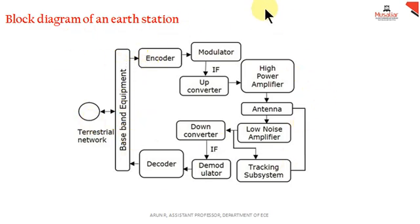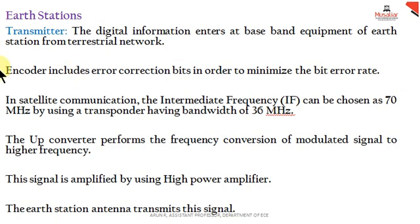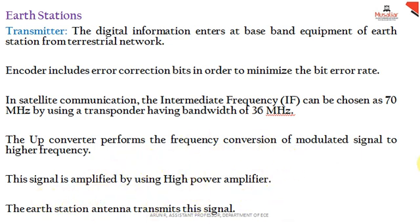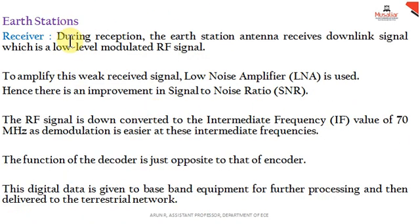The digital information enters at the baseband equipment from the terrestrial network. The encoder includes error correction bits in order to minimize the bit error rate. The upconverter performs frequency conversion to a higher frequency, and this gets amplified through a high power amplifier before being transmitted through the antenna. In the receiver, opposite to the transmitter section, the RF signal is converted to IF, it gets demodulated using a demodulator, and a decoder replaces the encoder. The digital data is then sent back to the baseband equipment for further processing.